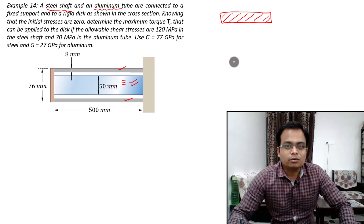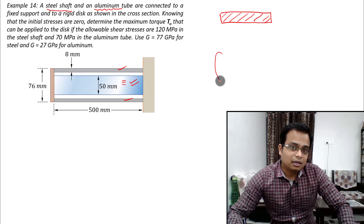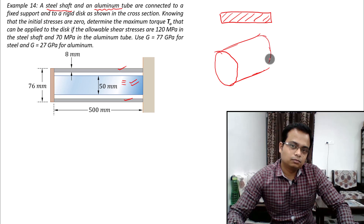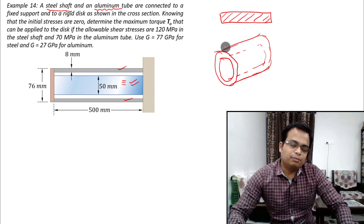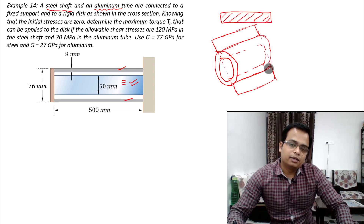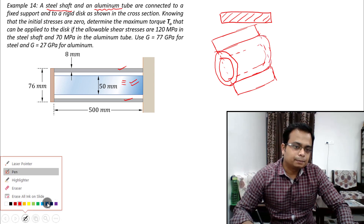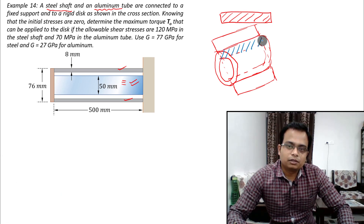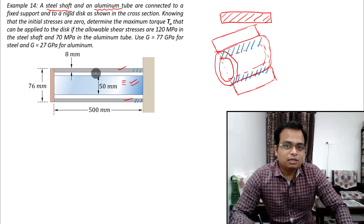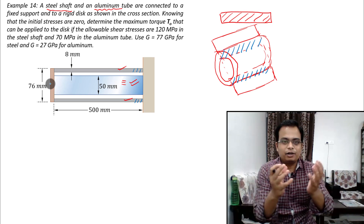You might wonder if there are two tubes — no, it's one and the same. If you cut this alone from here, it's basically engineering drawing. This is that portion — that's the cross section of the aluminum tube.